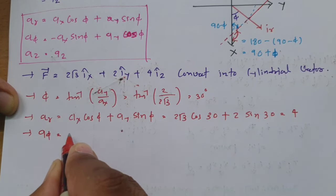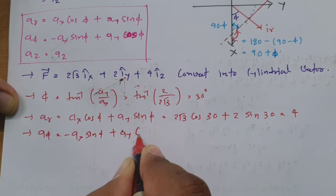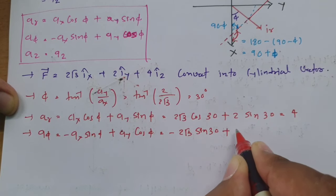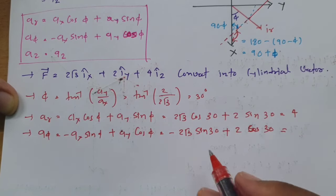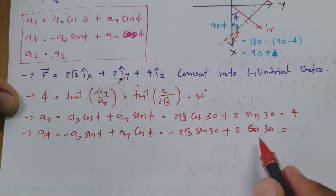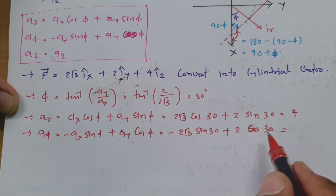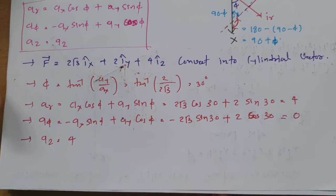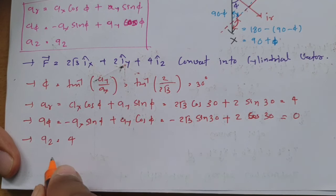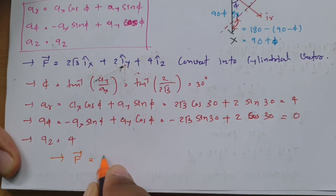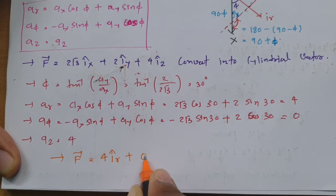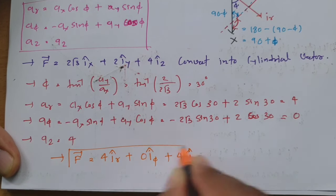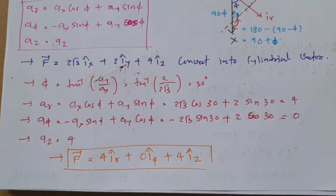Then we calculate Aφ = −AX·sin φ + AY·cos φ = −2√3·sin 30° + 2·cos 30° = −2√3·(1/2) + 2·(√3/2) = −√3 + √3 = 0. And AZ remains 4. So vector F in cylindrical coordinates is 4·IR + 0·Iφ + 4·IZ. This is how we convert a Cartesian vector into a Cylindrical vector.